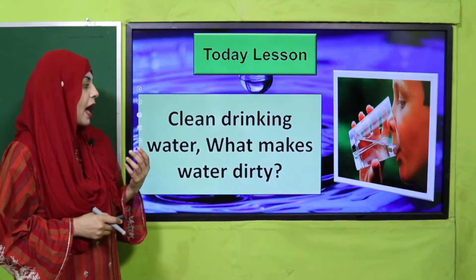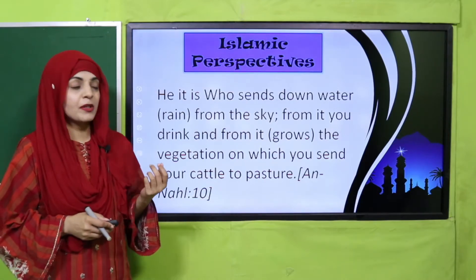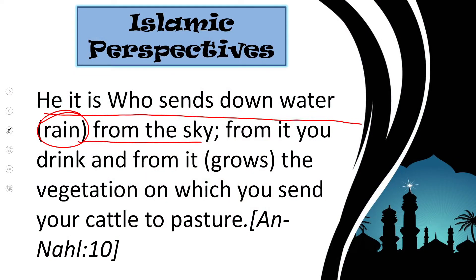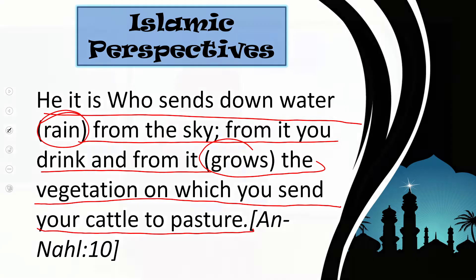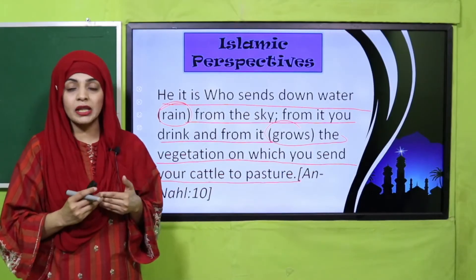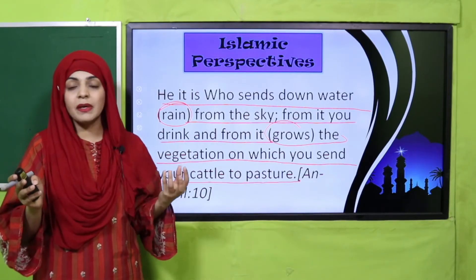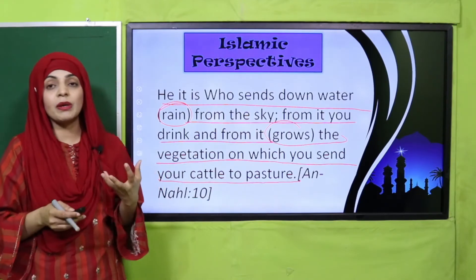In today's lesson, we will discuss about clean drinking water and what makes water dirty. Let's quickly look at the Islamic perspective: 'It is He who sends down water — that is, rain — from the sky. From it you drink, and from it grows the vegetation on which you send your cattle to pasture.' Allah Taala ne asmaan se barish ko barsaya hai, jis se hum apni pias bujhate hain, paudhe grow karte hain, aur janwar bhi paani peete hain. Water is extremely important.